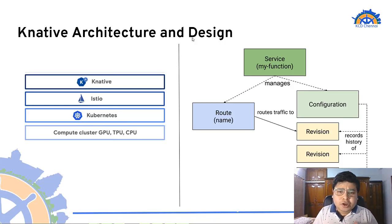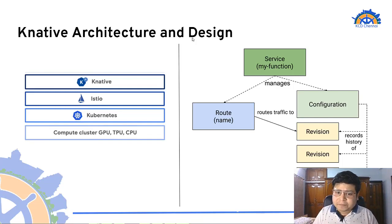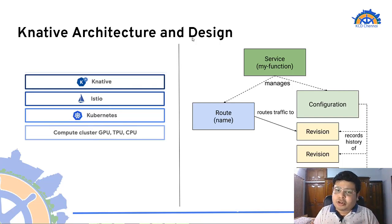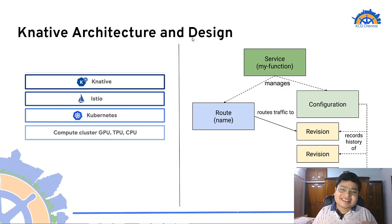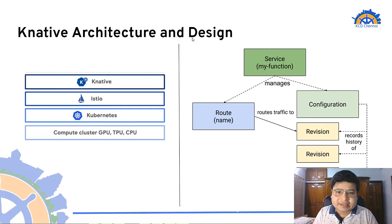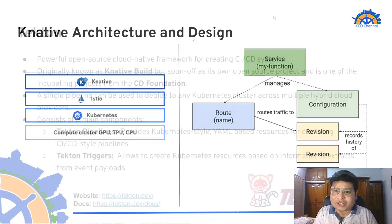Whenever there is a change in the Knative service file, a revision is created, which is a snapshot of the application code. Whenever a new revision is created, the traffic is routed to it, but we can still control the traffic with the Knative service file. Thus, with a single YAML file, we are able to deploy applications on Kubernetes without writing the standard YAML files required for deploying applications.